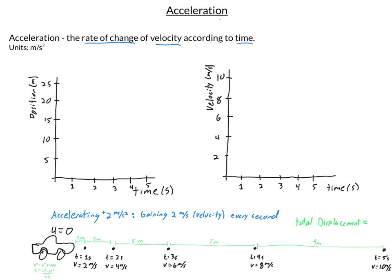We have a car accelerating at 2 meters per second squared, because the base unit for acceleration is meters per second squared. Starting with an initial velocity of zero — we use the letter U for initial velocity — after one second it is going 2 meters per second, and after two seconds its velocity increases to 4 meters per second. For every second, if my acceleration is 2 meters per second squared, the velocity increases by 2 meters per second.